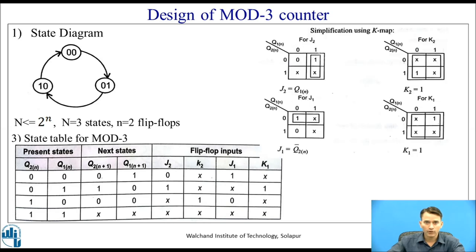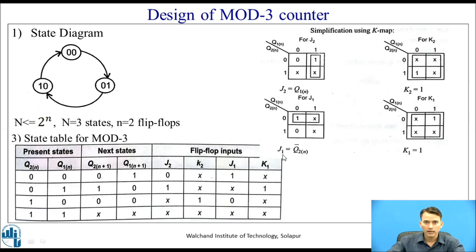Now we write the K-maps for all flip-flop inputs. For J2, we get output high (1) for the 01 combination. In the K-map, 1 is entered in that cell, and don't cares are placed for the 10 and 11 input combinations. Using the don't care, we form a pair, giving us J2 = Q1. For K2, output 1 is obtained for the 10 combination; the other three cells are don't cares, forming a quad, which gives K2 = 1. For J1, output high is obtained for 00, with two don't cares forming a pair, giving J1 = Q2-bar.